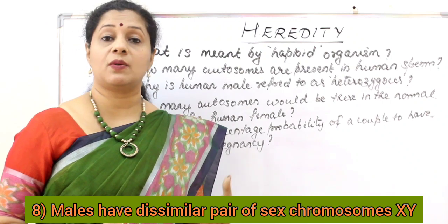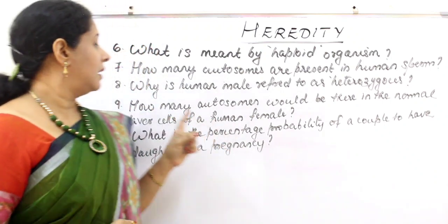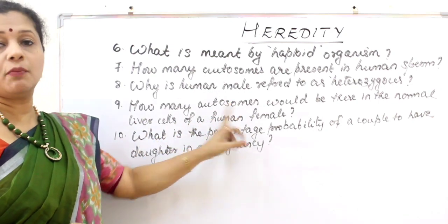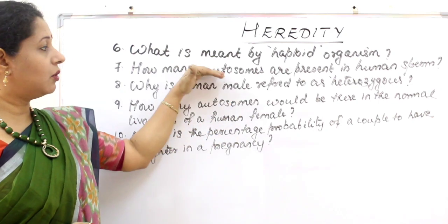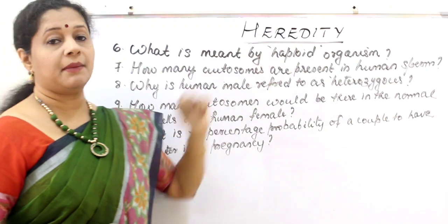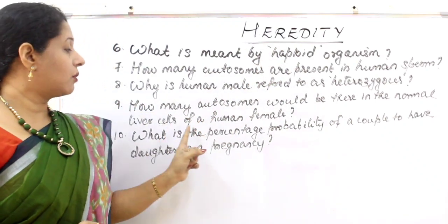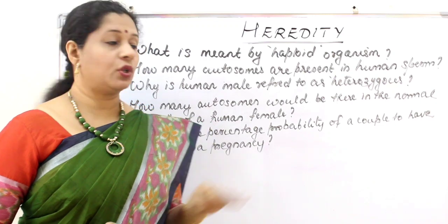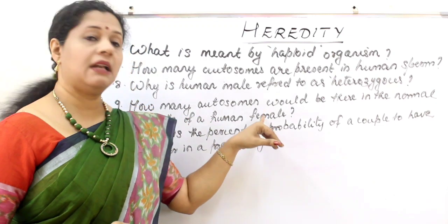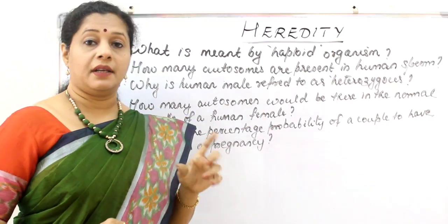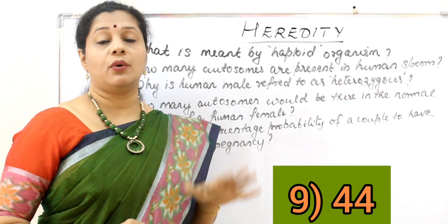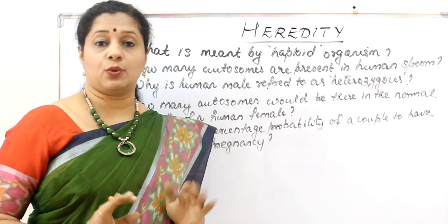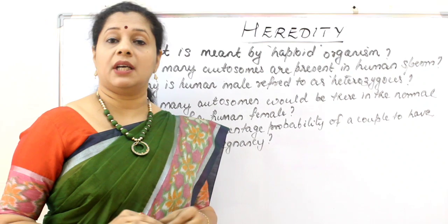How many autosomes would be present in normal liver cells of a human female? Liver cells are non-reproductive (somatic) cells. Both male and female have 44 autosomes in their somatic cells. So the answer is 44 autosomes.